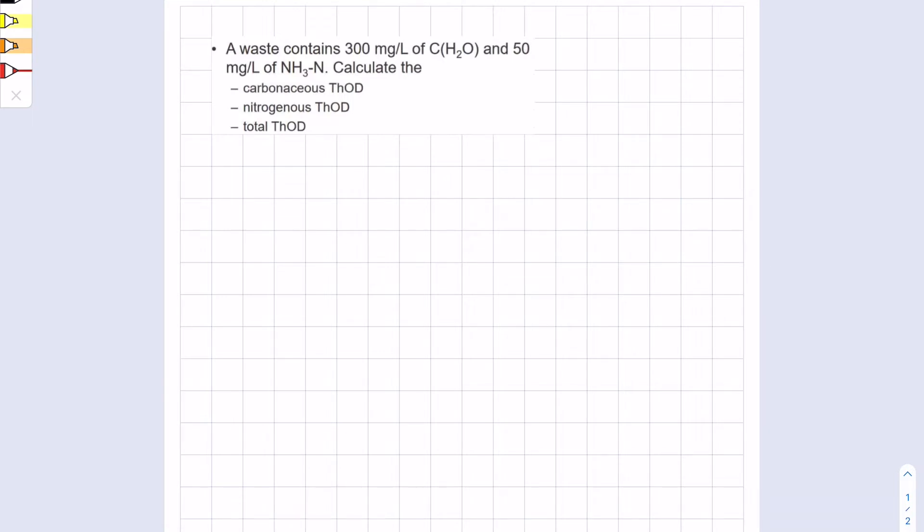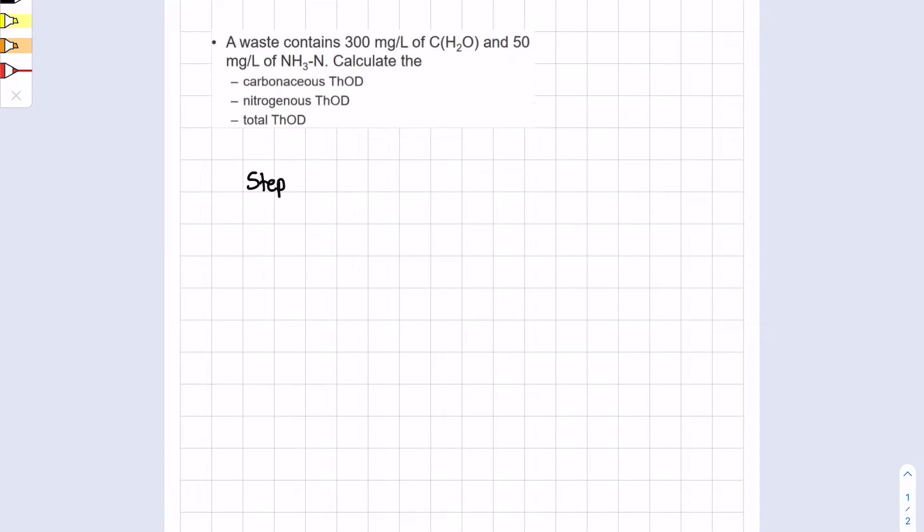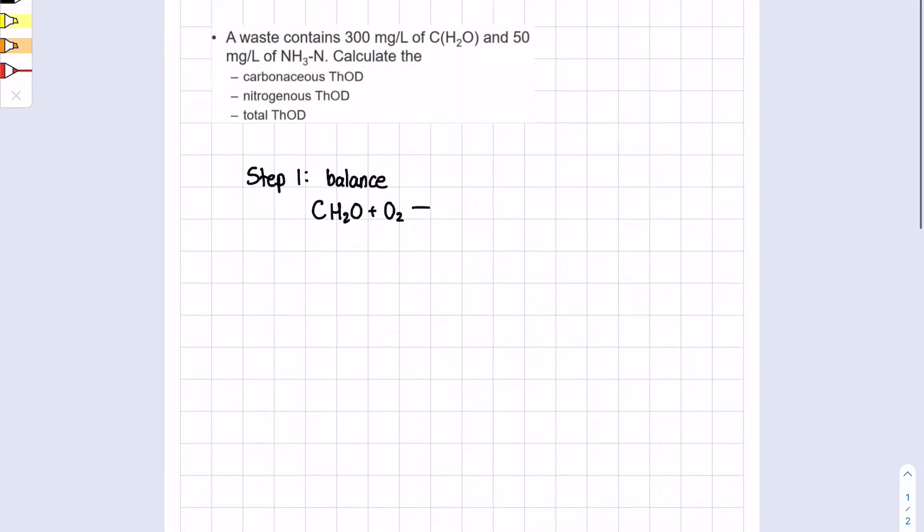First, step one: we have to balance the equation. So if we write out our equation, CH2O + O2 produces CO2 + H2O. If we look at this, we have one carbon, one carbon, two hydrogens, two hydrogens, three oxygens, three oxygens. This is considered balanced, perfect.